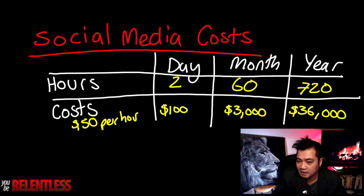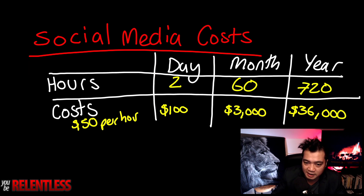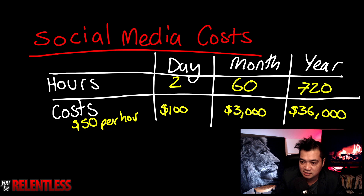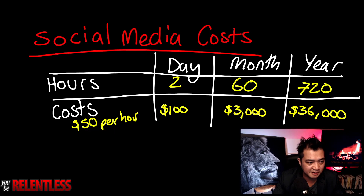This is real stuff. We are spending two hours per day on social media, which translates to 720 hours per year. At $50 per hour, that's $100 a day, $3,000 per month, $36,000 per year. Imagine paying someone $36,000 just to keep logging onto this thing, plus giving up 720 hours of your time. It gets pretty scary.